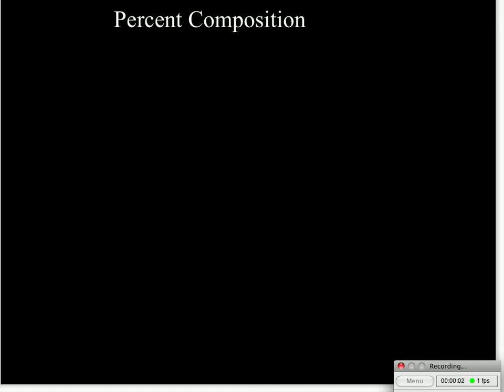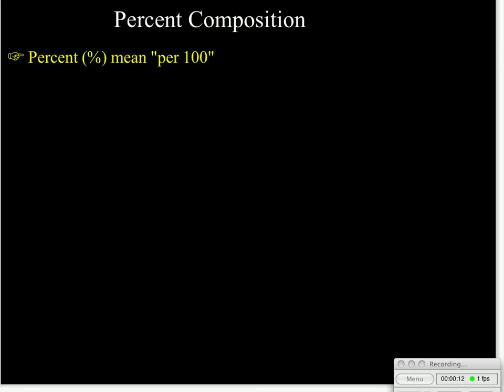The purpose of this mini lecture is to talk about percent composition and percent composition problems as it applies to various substances. First of all, when we're dealing with percent, remember that percent means per 100, and in this case we are calculating it for substances not on the basis of how many particles show up in the substance, but what the mass of the substances are.